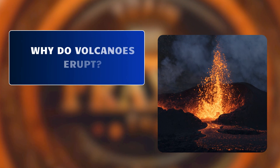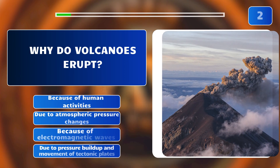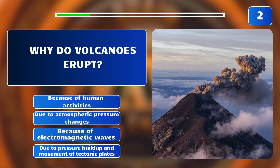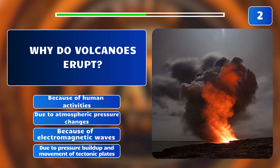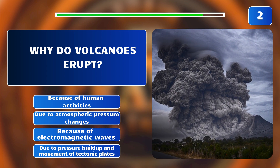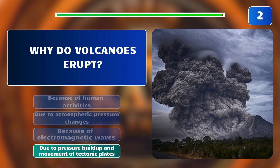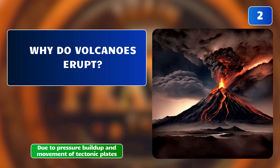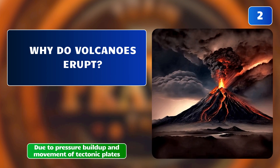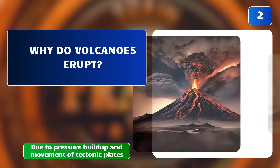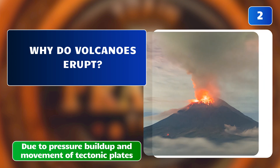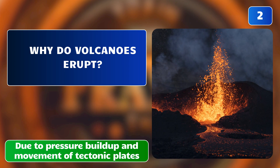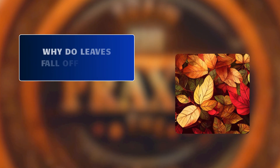Why do volcanoes erupt? Because of human activities? Due to atmospheric pressure changes? Because of electromagnetic waves? Due to pressure build-up and movement of tectonic plates? The correct answer is: due to pressure build-up and movement of tectonic plates. Magma from beneath the Earth's surface rises and erupts due to pressure build-up and movement of tectonic plates.